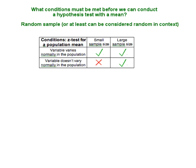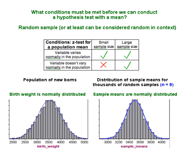Let's look at a familiar example from our work on sampling distributions to remind us of this fact. Birth weights are normally distributed in the population of newborns.